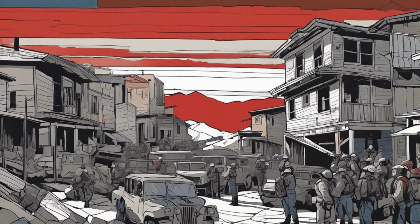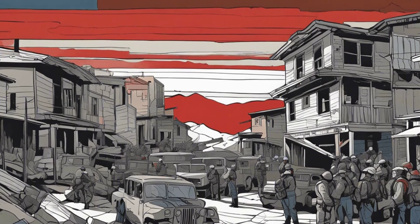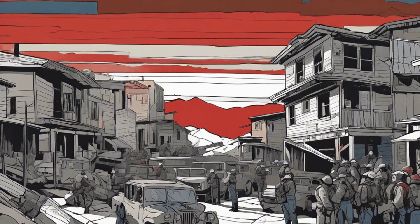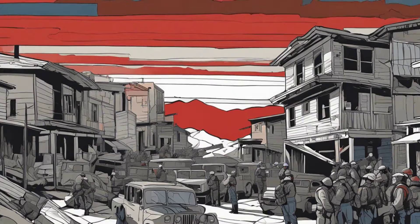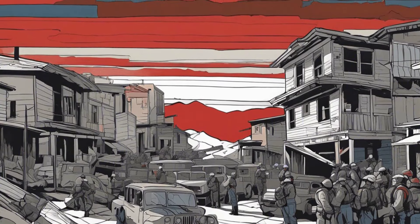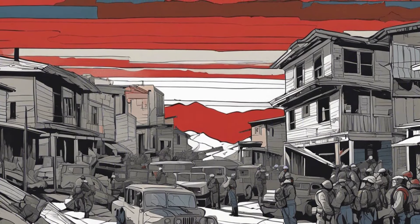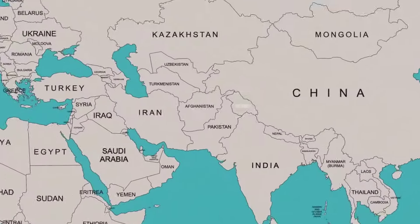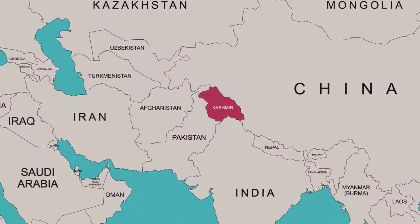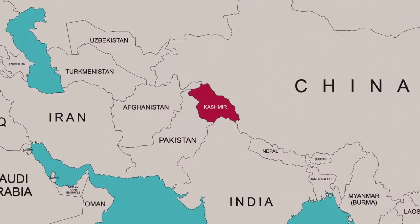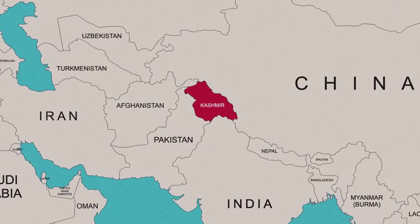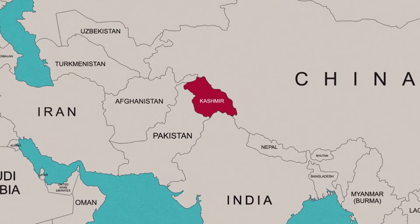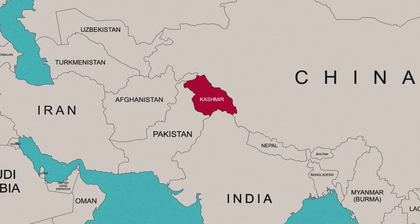This is not just a simple territorial dispute — it's a deeply rooted clash involving religion, politics, and national identities. What historical events and decisions led to the current situation, and what are the potential solutions that might finally bring peace to this troubled area?